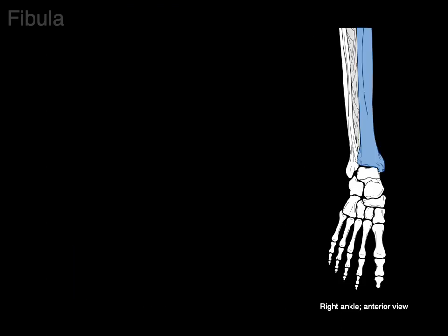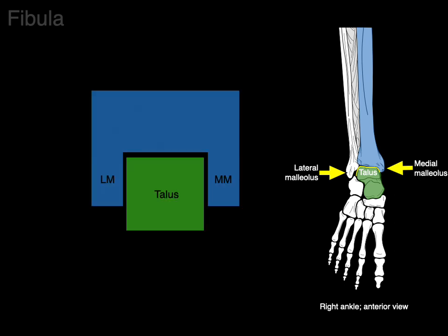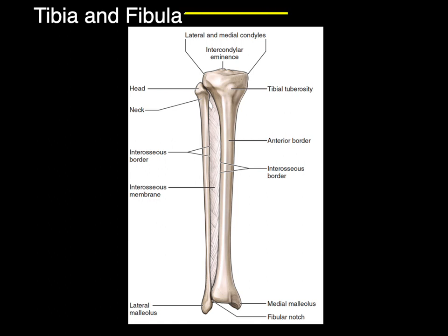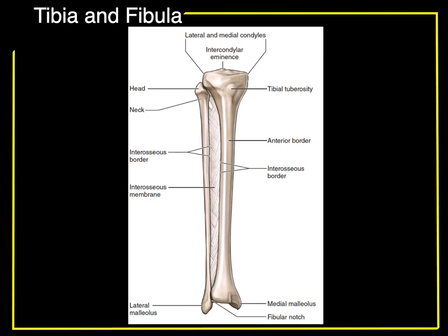Now focusing on the ankle joint: there's the lateral malleolus, the medial malleolus, and the talus bone. The talus bone, sitting between the tibia and fibula, forms what's called the mortise joint — the tibiotalar joint between the medial and lateral malleoli. That is the joint that enables us to do dorsiflexion and plantar flexion. And that, my friends, is the tibia and fibula in a nutshell.